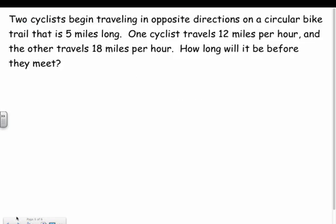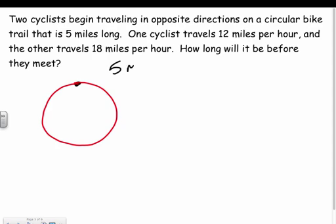Here's the problem: two cyclists begin traveling in opposite directions on a circular bike trail that is 5 miles long. One travels at 12 mph and the other at 18 mph. How long before they meet? A lot of people find these confusing, so I like to draw a picture to help visualize what's happening. Two cyclists start from the same spot on a circular 5-mile track.